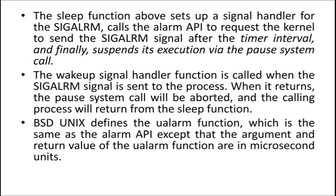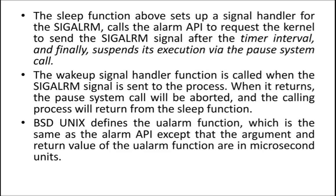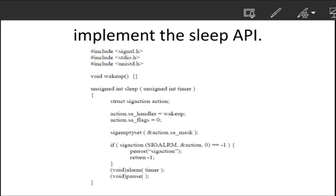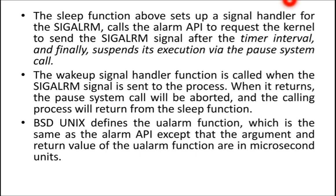In BSD Unix, there is one more function — the ualarm function — which is not available in other Unix variants. The ualarm function in BSD Unix works the same as the alarm API, except that the argument and the return value of the ualarm function are in microsecond units. Whatever time value you set in alarm is in seconds, but in the ualarm function supported in BSD Unix, the time value is in microseconds — that is the difference.